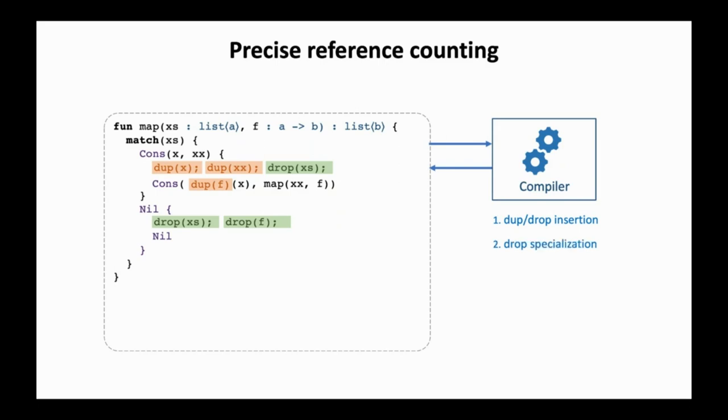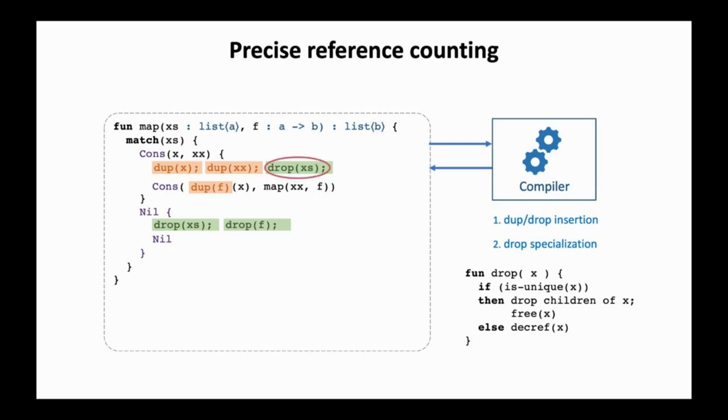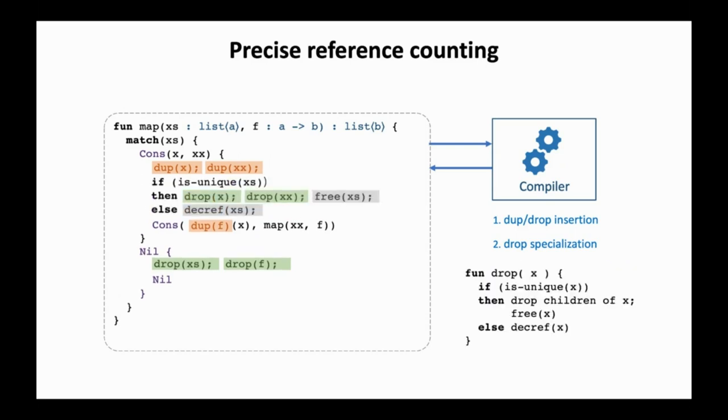After the dump-drop insertion, we perform a drop specialization pass. The basic drop operation is defined as follows in pseudocode. If the resource is unique, we will drop all its children and free it. Otherwise, we will decrement its reference count. The drop specialization essentially inlines the drop operation specialized as a specific constructor. We need to be a little bit smart with the drop specialization though. In particular, we only apply drop specialization if the children are used. So in this case, we will specialize the dropXS instruction.